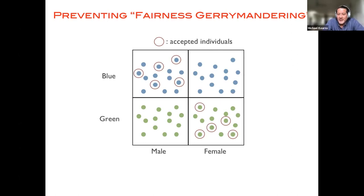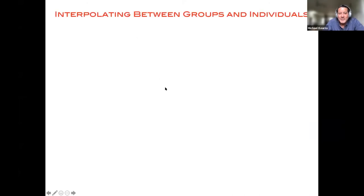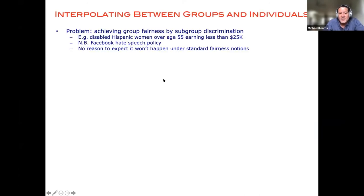Okay, so fairness gerrymandering. Let me speed up a little bit and skip to this slide. Okay, by the way, fairness gerrymandering, after we kind of came up with this notion, was pointed out to us that this is closely related to the feminist theory notion of intersectionality that was developed back in the 1970s. So there's nothing new under the sun, it turns out, but so what's the idea of this stronger fairness definition.